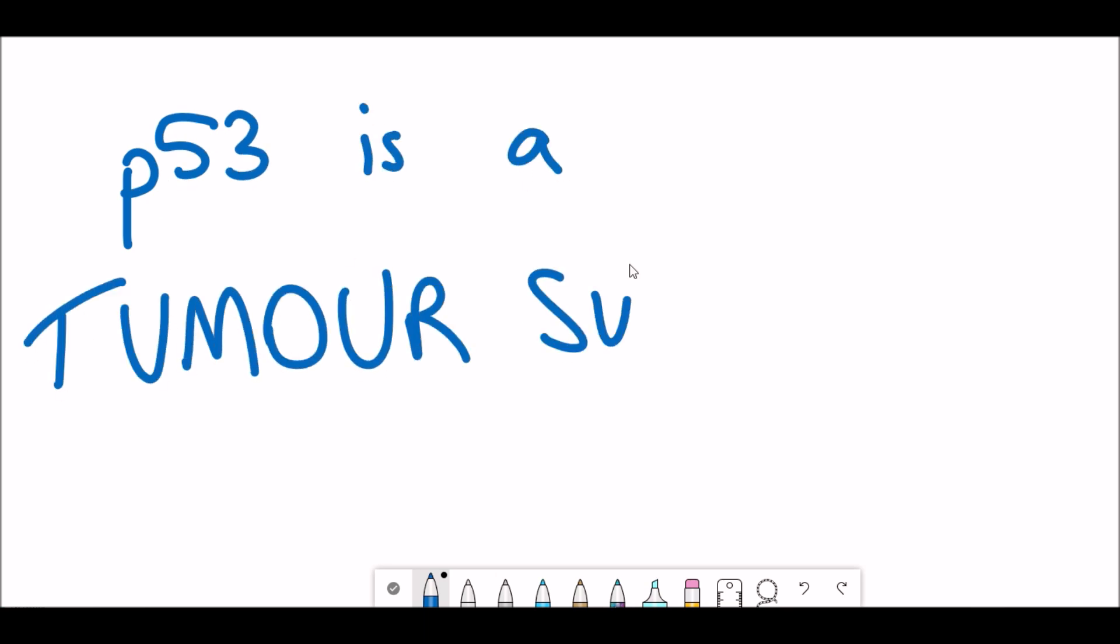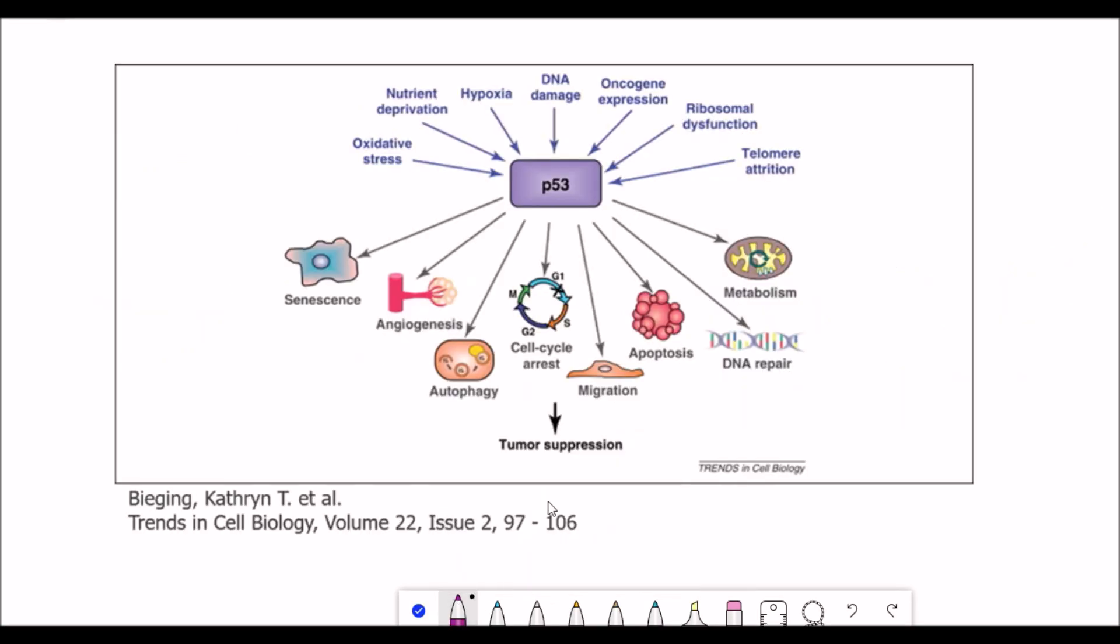These mutations affect the function of p53 which is as a tumor suppressor. p53 is activated by a variety of different stressors that cells undergo and it activates various different responses in accordance to these stresses. This is all to restore homeostasis within a cell and to prevent any damage. For these reasons, p53 is often referred to as a tumor suppressor. However, when the protein gets mutated these responses become defective and that can lead to cancer growth and tumor formation.